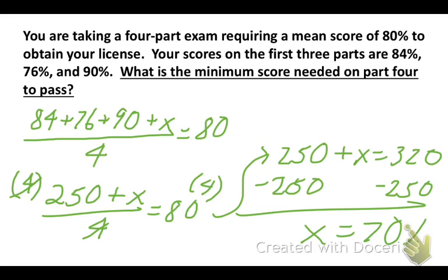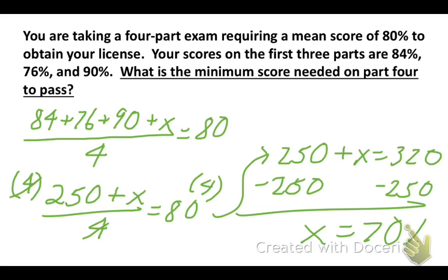But there's another way to do this problem as well. And here's the alternative. So if we need a mean score of 80%, that means that I need an 80% times 4, or 320 points is what I need.